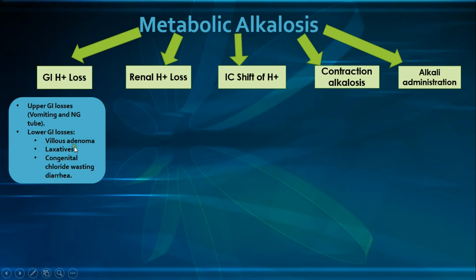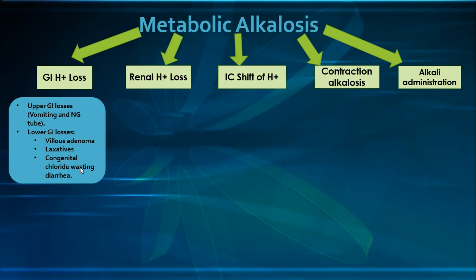Lower GI causes of metabolic alkalosis include diarrhea due to villous adenoma or laxative use, because these conditions produce more severe hypokalemia than other diarrhea types, and this excessive hypokalemia triggers metabolic alkalosis. A third condition is congenital chloride-wasting diarrhea, where a defect in the chloride-bicarbonate exchanger in the ileum and colon results in excess chloride in the stool and retained bicarbonate in the body, causing metabolic alkalosis.